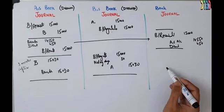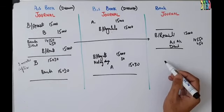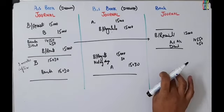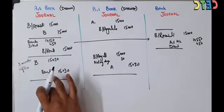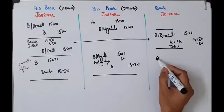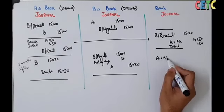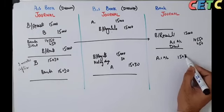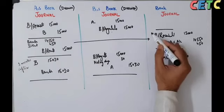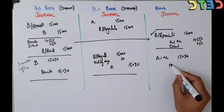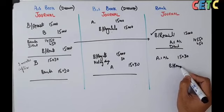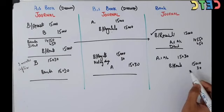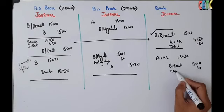Bank की book में dishonor की entry: जिसने bill दिया था — यानि A — उसका नाम debit करेंगे। A is Account debit ₹15,030। और जो bill bank के पास debit खड़ा था — Bills Receivable credit ₹15,000। और ₹30 जो bank ने noting charges pay किए — Cash credit ₹30। यह bank की पूरी entry है।